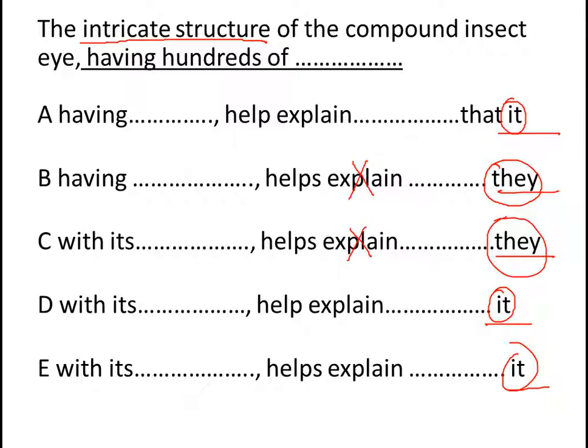We are left with A, D, and E. Further, if you compare them, we can see after the comma, we have a split of 'help' and 'helps'. This is a singular-plural verb error. Again, the subject is the intricate structure, so we need a singular verb. Remember, 'help' is plural, so eliminate A and D. Hence, E is the correct answer.